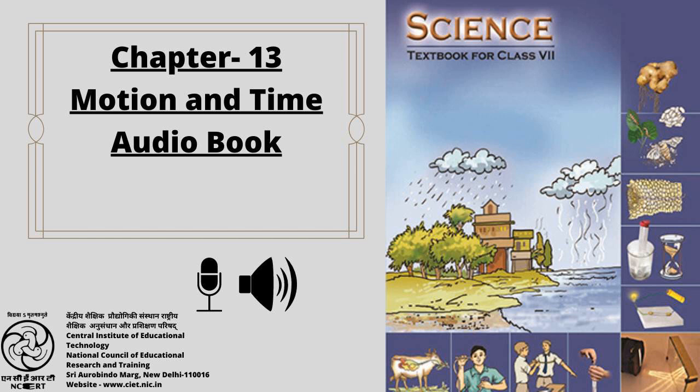In Class 6, you learned about different types of motions. You learned that a motion could be along a straight line, it could be circular or periodic. Can you recall these three types of motions? Table 13.1 gives some common examples of motions. Identify the type of motion in each case.